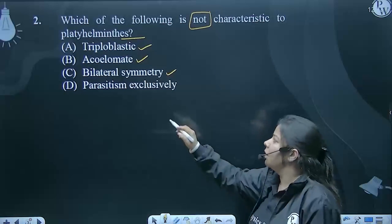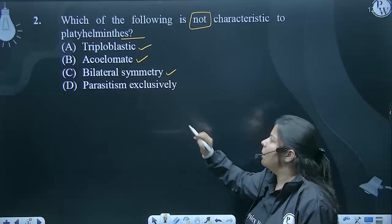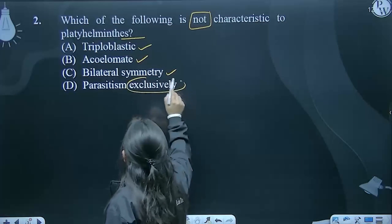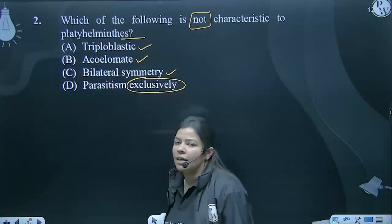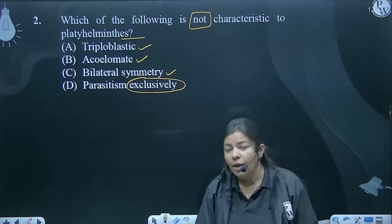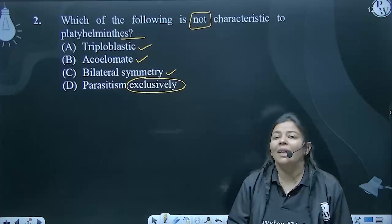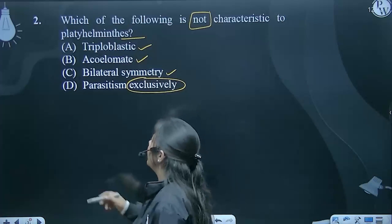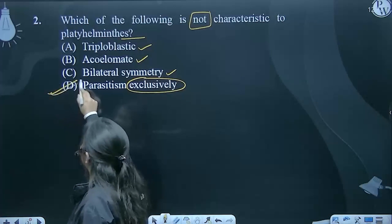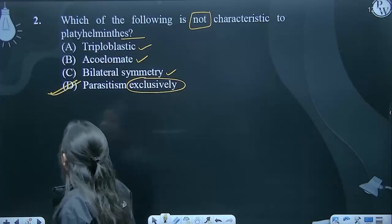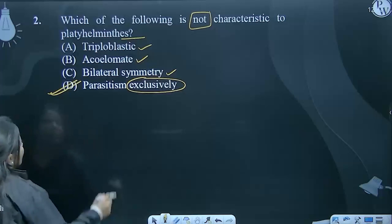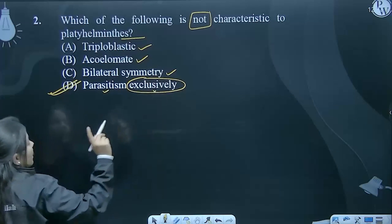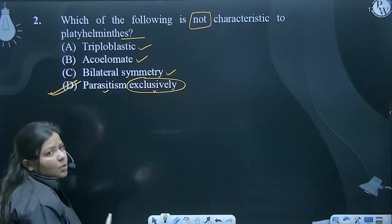It is first radial symmetry. Then parasitism happens, but it is not exclusively so — not all organisms have mandatory parasitism. This is not possible in the case of Platyhelminthes, so the correct answer is option D, because parasitism is there but not exclusively, as not all organisms are parasitic.